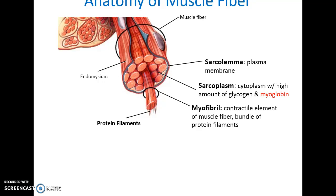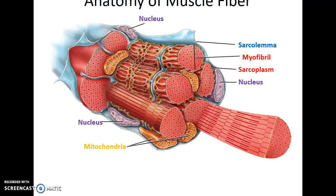The sarcoplasm has high concentrations of glycogen and myoglobin. Myoglobin is a red protein that binds oxygen, and glycogen consists of long chains of glucose molecules. Of course, the myofibrils — those protein columns that act as the contractile element — are what causes the muscle fiber to get shorter.